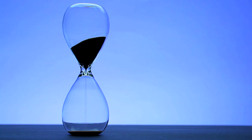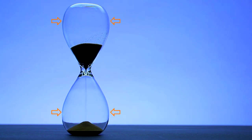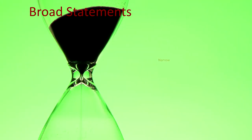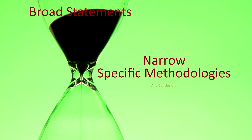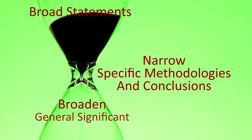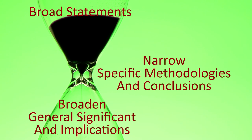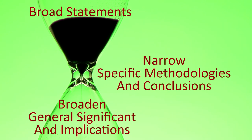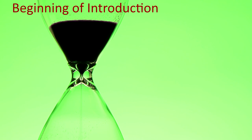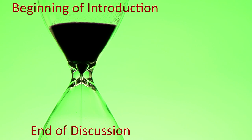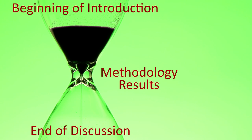An hourglass shape is a good metaphor to guide you in your writing. The width of the glass represents the breadth of your writing — wider at the beginning and end and narrower in the middle. You begin by introducing broad statements, narrow your focus to specific methodologies and conclusions, and then broaden again to discuss the general significance and implications of your work. Thus, the beginning of your introduction and the end of your discussion should contain your broadest statements, and the methodology and results section should contain your most specific statements.